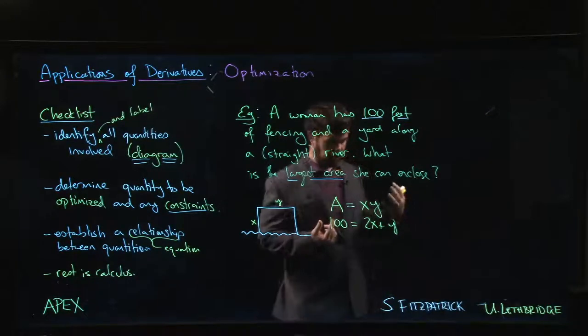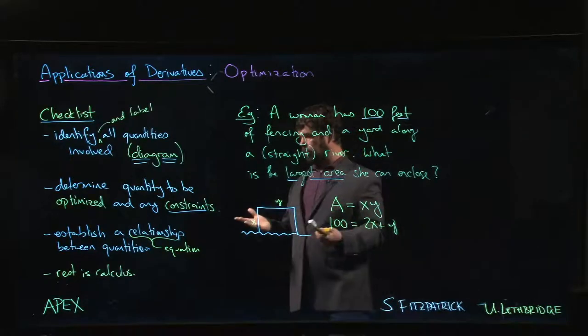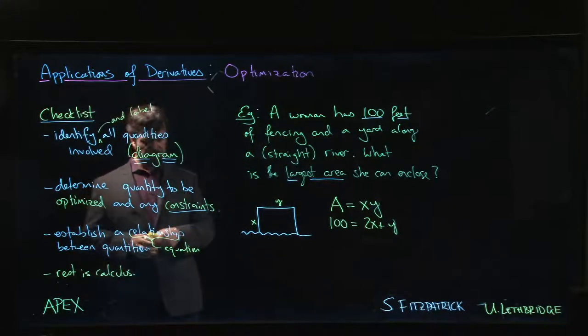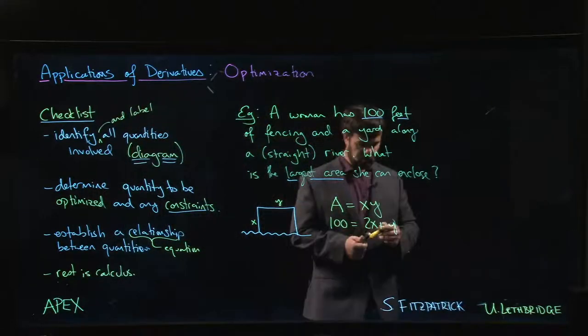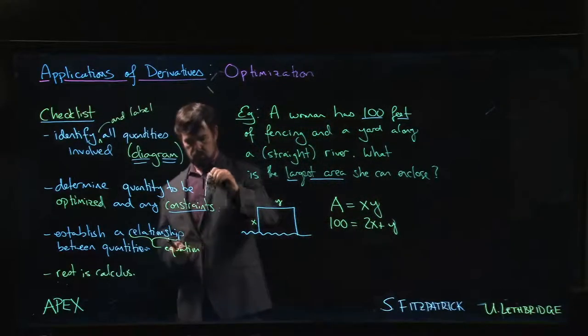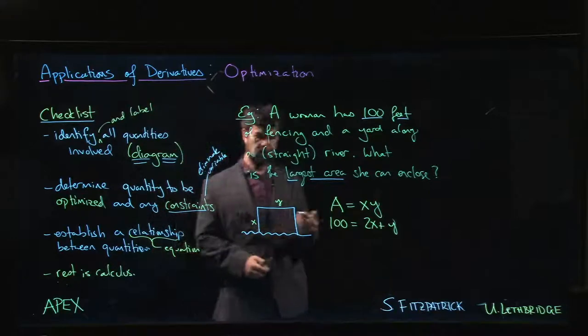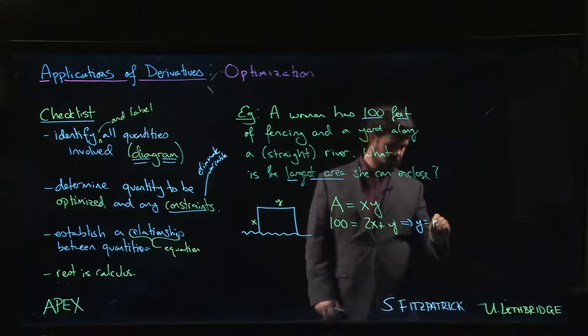So as usual in these optimization problems, you've got this relationship between the quantities. And in fact, for optimization you want two relationships: you want the constraint relationship and the optimization relationship. And in this case what you do with the constraint is you always use this constraint to eliminate one or more variables. So what we do here is we say, okay, well let's solve for y. Y is 100 minus 2x.